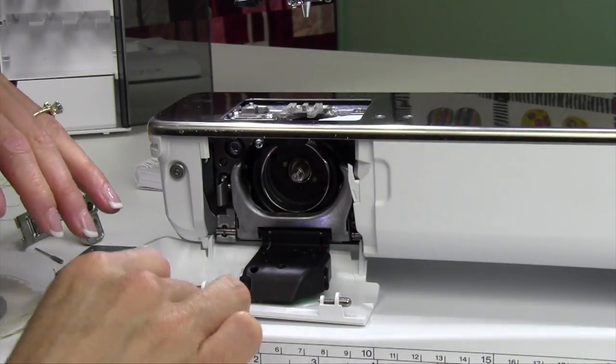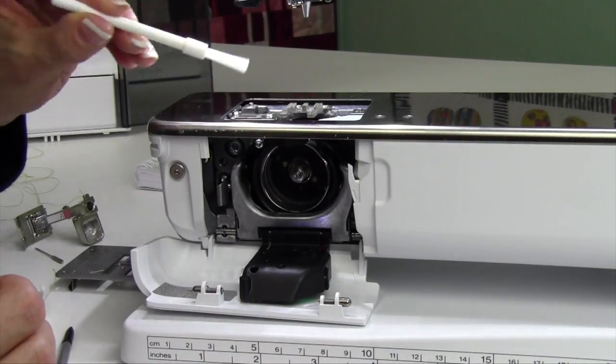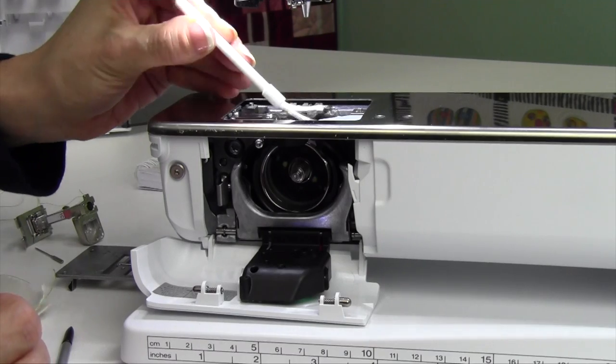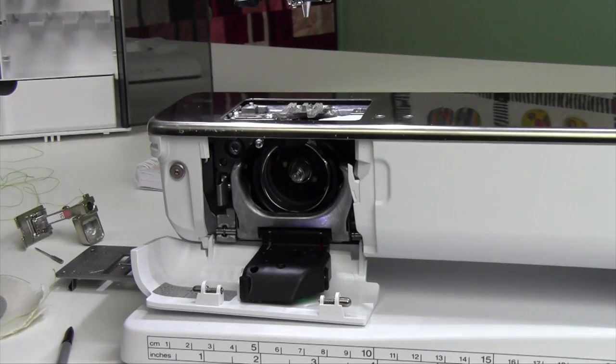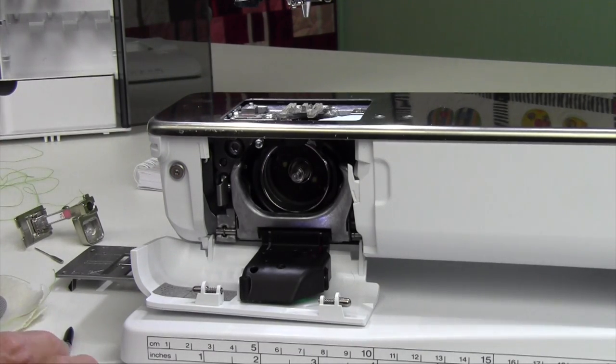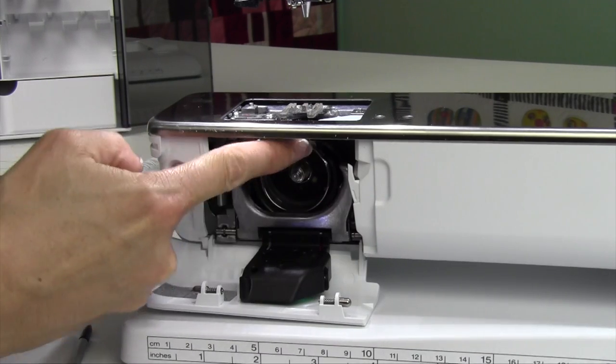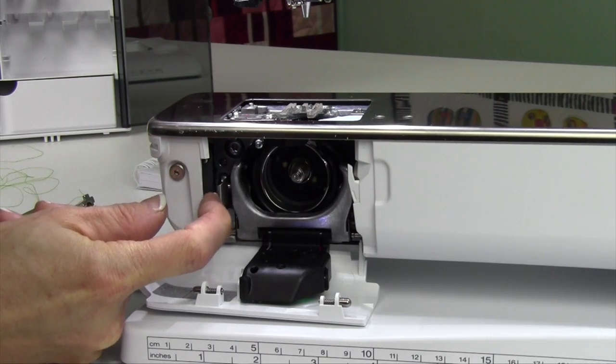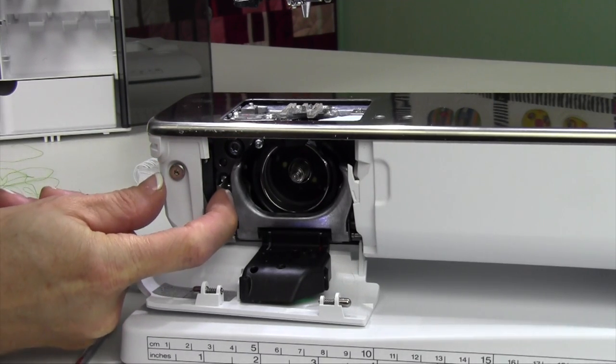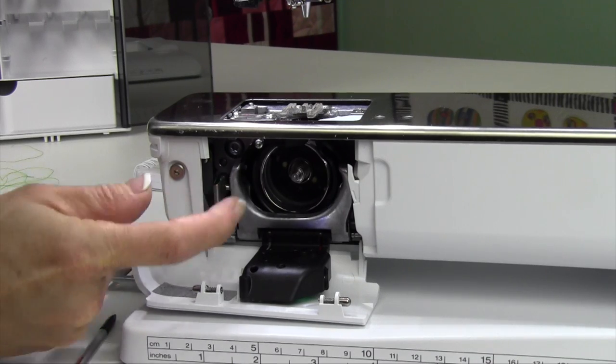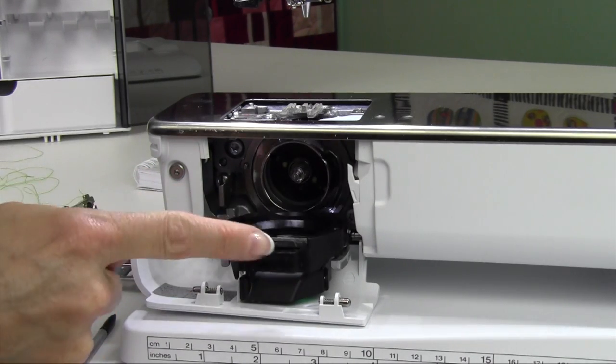Right here is where you'll start to see a lot of lint. You can go ahead and brush it towards you. Don't blow in here. That's going to really make it not a good thing. Next we're going to open up this area by pressing on this silver bar right here. Push to the left. That will go ahead and bring this down.